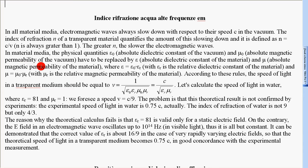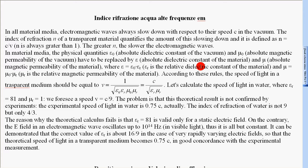Where ε is equal to ε0 times εr, εr is the relative dielectric constant of the material, and μ equal to μ0 times μr, μr is the relative magnetic permeability of the material.